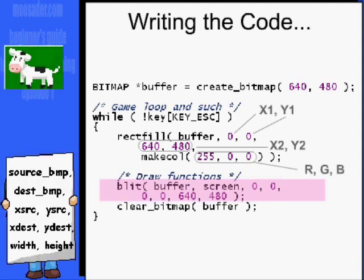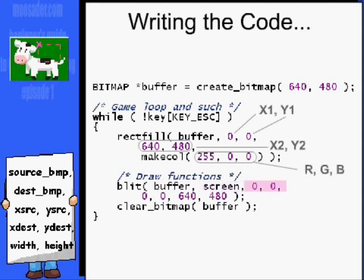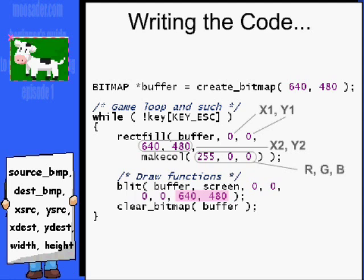The parameters for blit() are: the image, which is our buffer; the destination, which is the screen; the x and y coordinates to begin drawing from on the image — and since we want the entire image, we'll start at the top left at (0, 0); the x and y coordinates to draw to, so also (0, 0); and the width and height of our buffer image, which is the screen resolution.